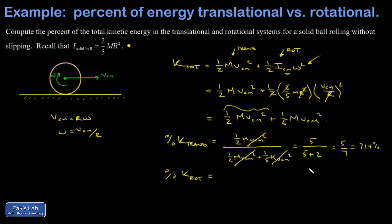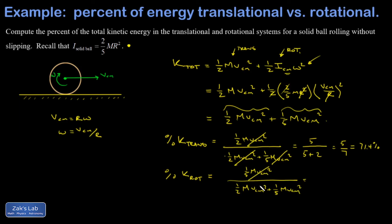For the rotational percentage, I could just say 100% minus 71.4%, but I'll verify it directly. The rotational piece is one-fifth m v_cm squared divided by the total (one-half plus one-fifth) m v_cm squared, giving one-fifth over (one-half plus one-fifth). Multiplying top and bottom by ten gives two over (five plus two), which is two-sevenths. This adds to one together with five-sevenths, confirming it works. As a percentage, the rotational part is 28.6%.